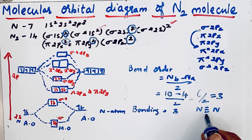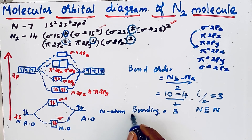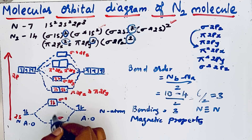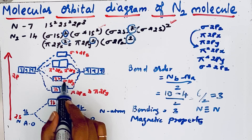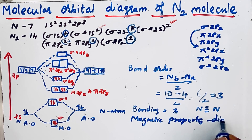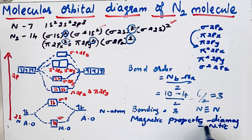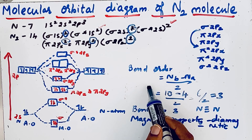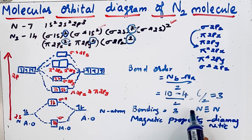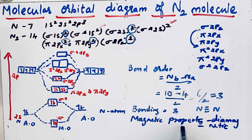Now let's look at the magnetic property. Since all electrons are paired, the nitrogen molecule is diamagnetic. In summary, the bond order of nitrogen is 3, there is a triple bond, it is very stable, and its magnetic property is diamagnetic. Thanks for watching.